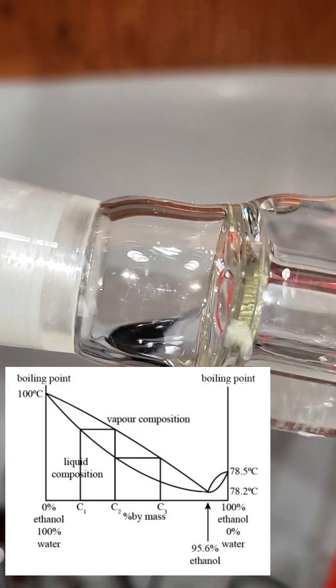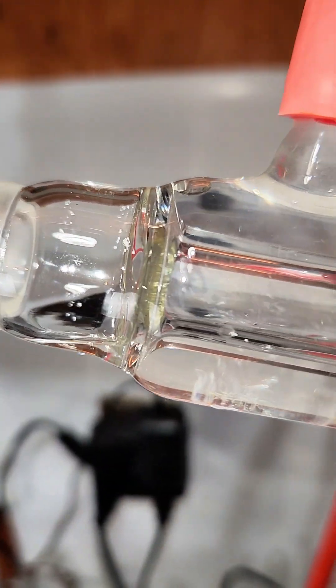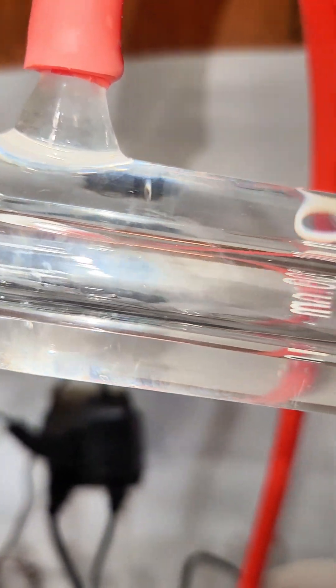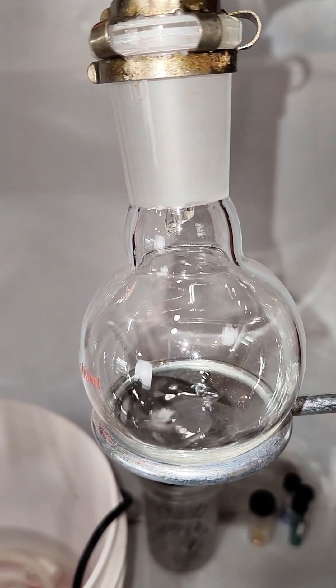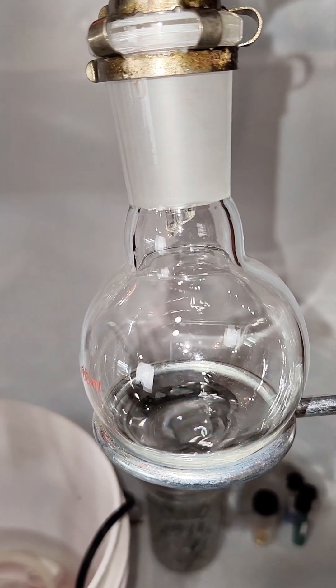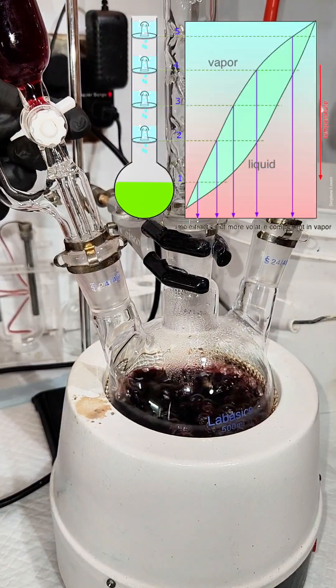If I keep distilling over and over again, I'm going to get a stronger alcoholic solution each time with a lower boiling point than the previous solution. Doing this in practice though would suck, and instead we use a fractional column where the vapor pressure of ethanol increases the further up the column you go.